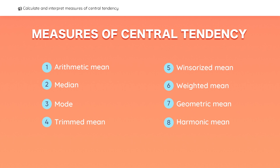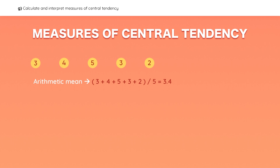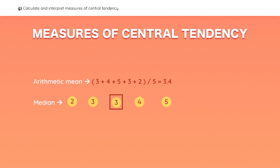In this next learning outcome, we will cover measures of central tendency, which are used to specify where the data is centered. The arithmetic mean of this data set is equal to 3.4. To get the median, place the observations in order and select the middle one — if there is an even number of observations, take the average of the two middle values. The mode is the value that occurs most frequently in the data set, which in this case is the number three.